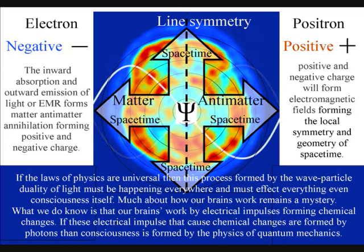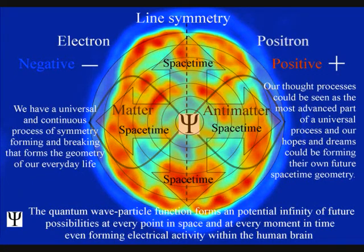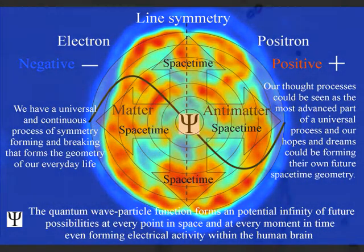The brain works by electrical impulses forming chemical changes, forming the continuous flow of ideas that we feel as consciousness. This electrical activity is universal, because we cannot achieve absolute zero.